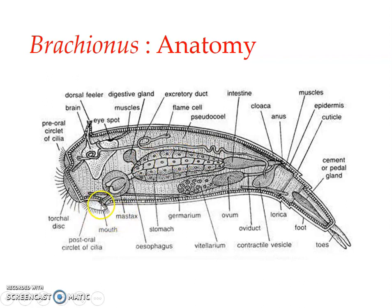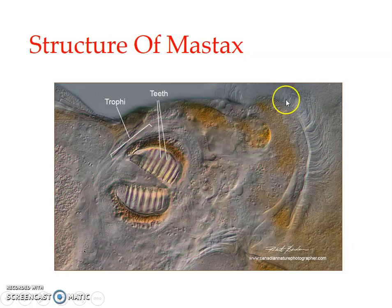The mouth leads to a very short ciliated buccal tube, which opens into a massive, rounded, strongly muscular pharynx. The main function of the pharynx is grinding or mastication — it functions as a masticatory apparatus. This masticatory apparatus is provided with a unique dental mill or jaw apparatus known as the mastax. The pharynx is thus modified around the mastax, as visible in the real photograph shown.